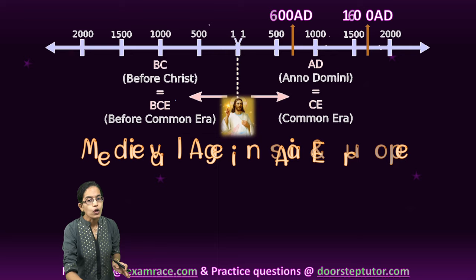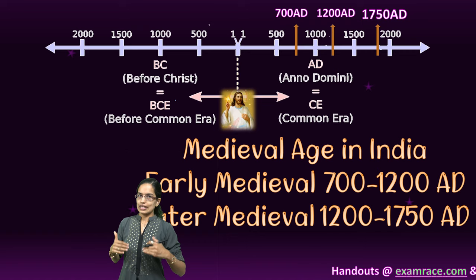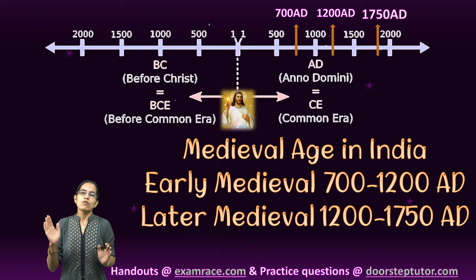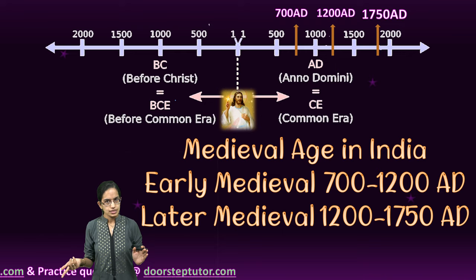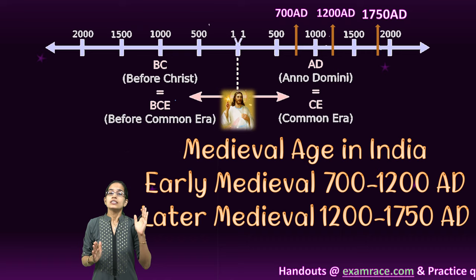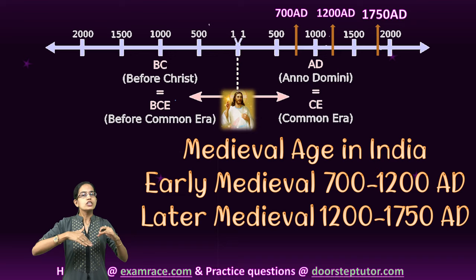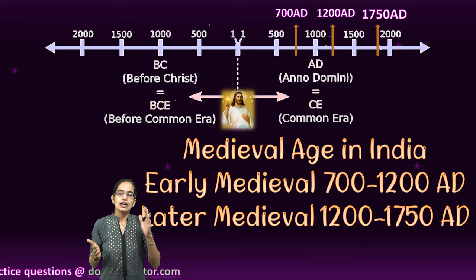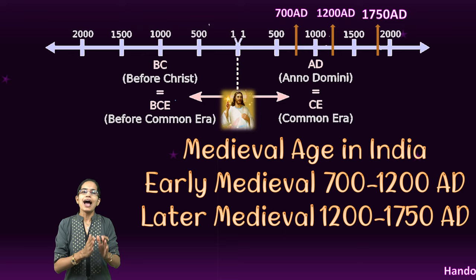When we talk about India, we classify this into Early Medieval and Later Medieval. Overall, the Medieval Age in India starts about 100 years later than in Asia and Europe. It starts from 700 AD and lasts till 1750 AD. This period is further subdivided into two: the Early Medieval from 700 to 1200 AD, and the Later Medieval from 1280 to 1750 AD.